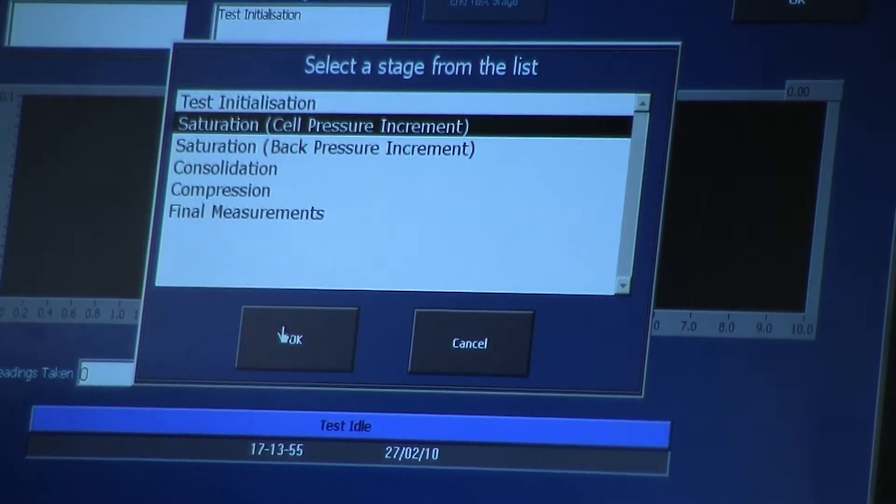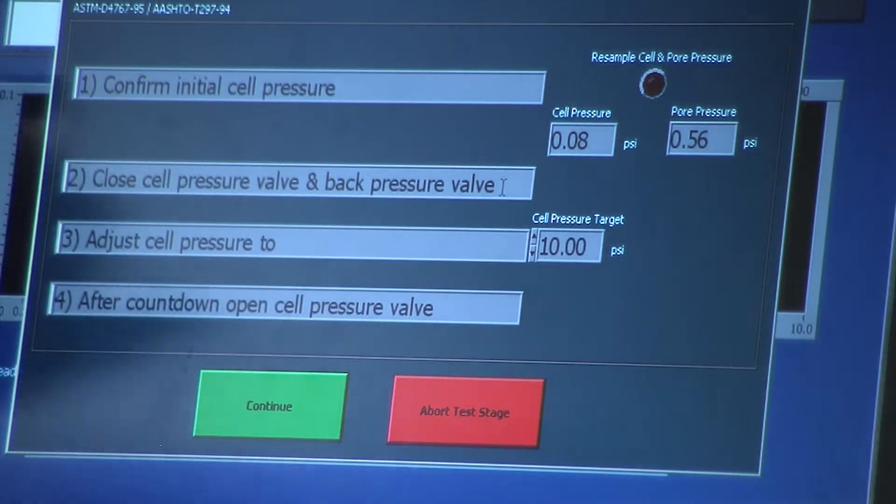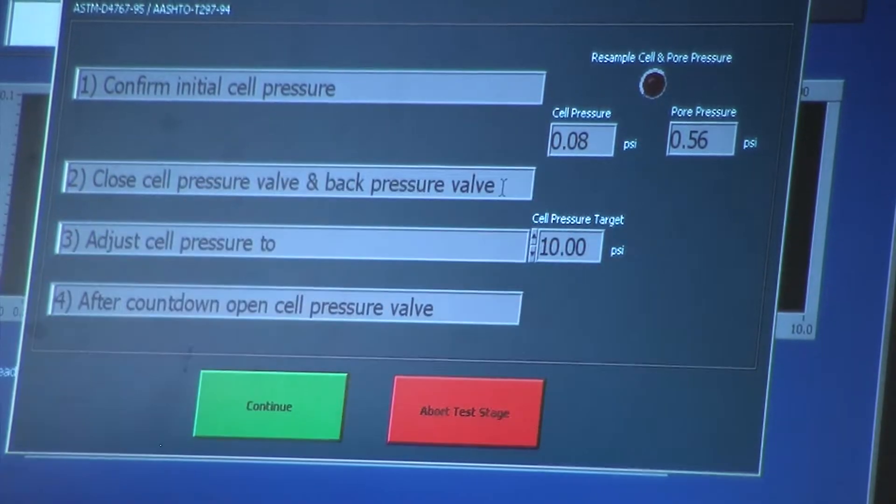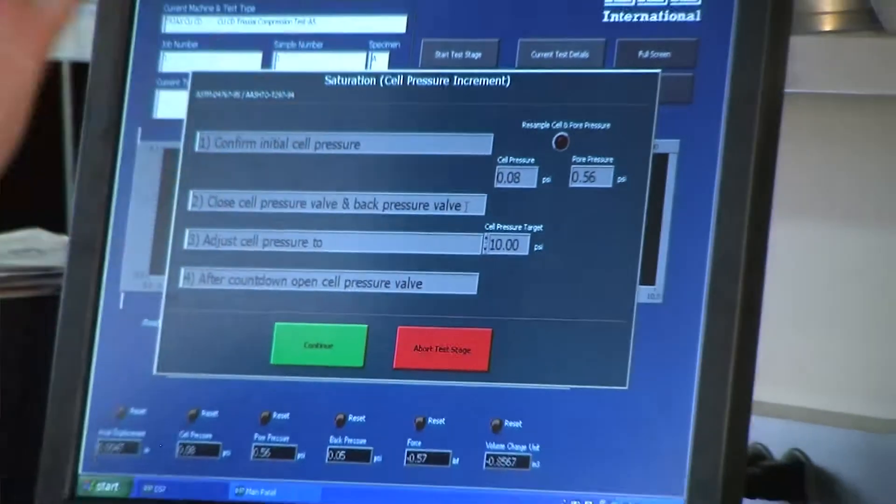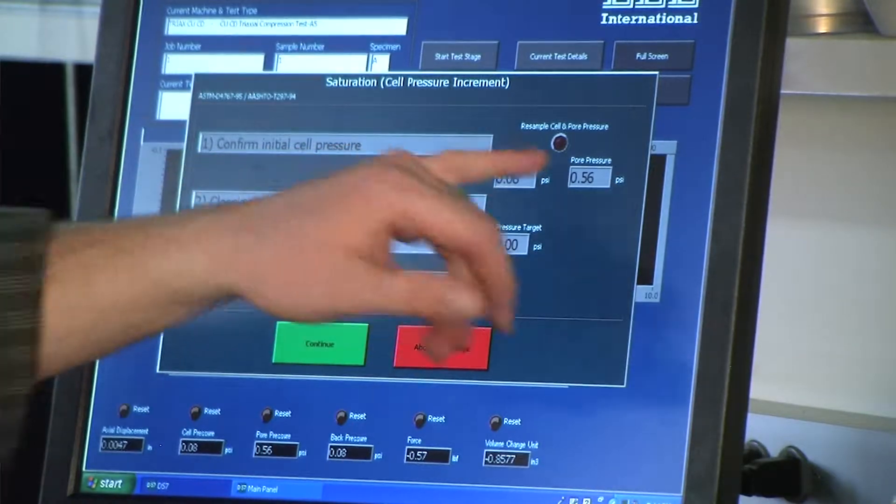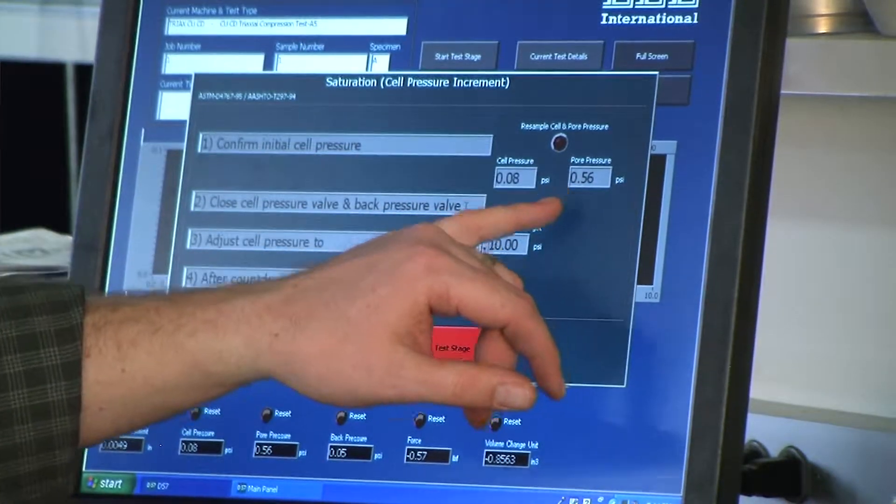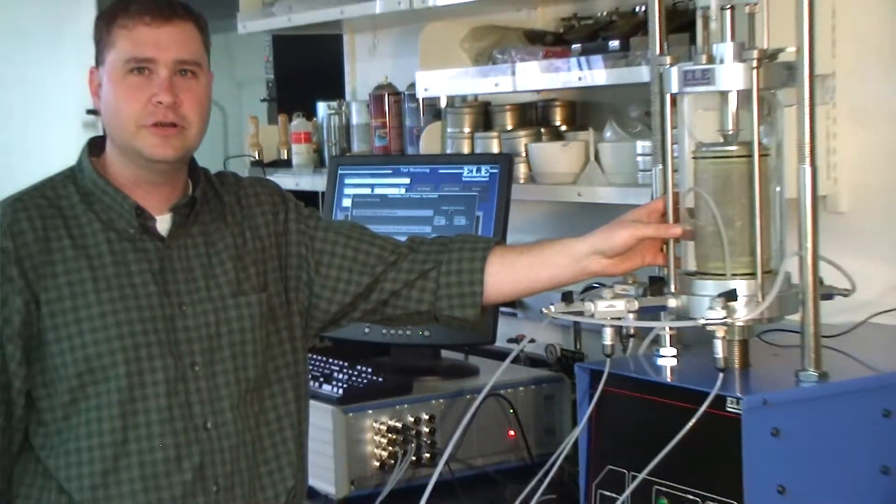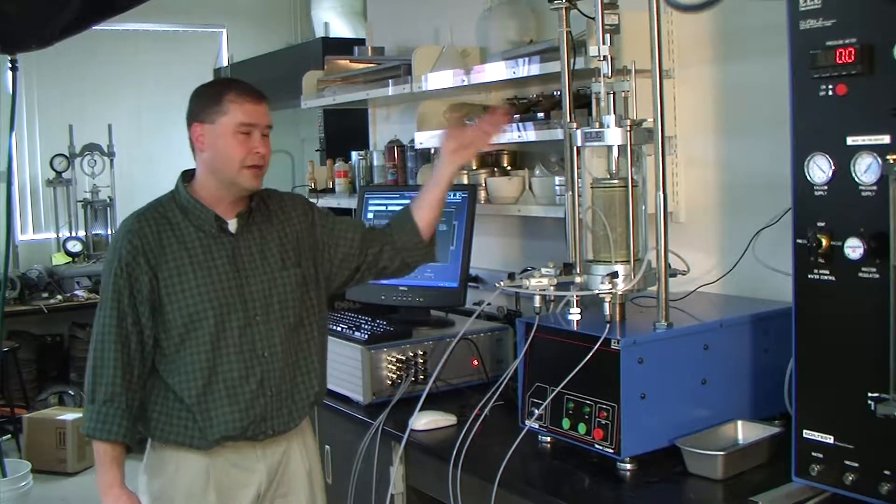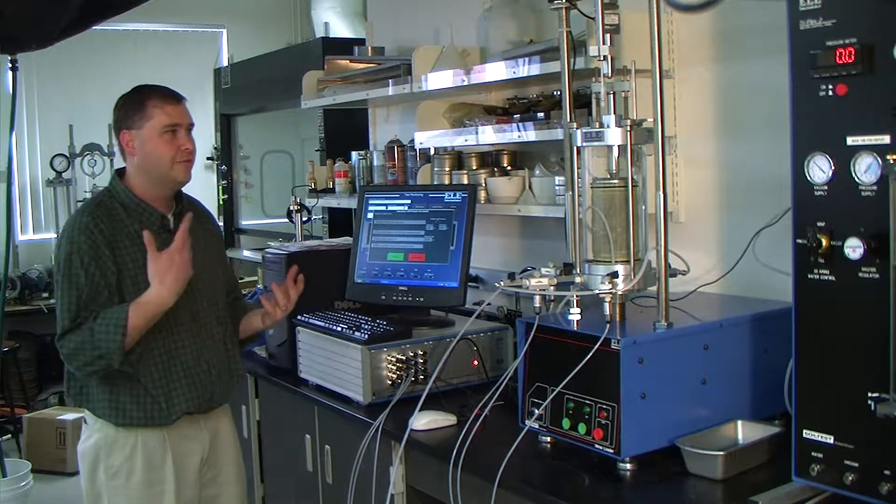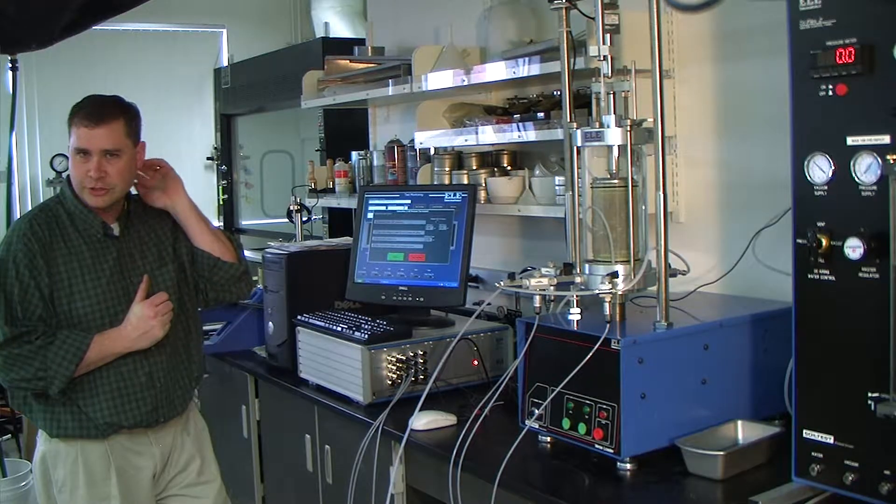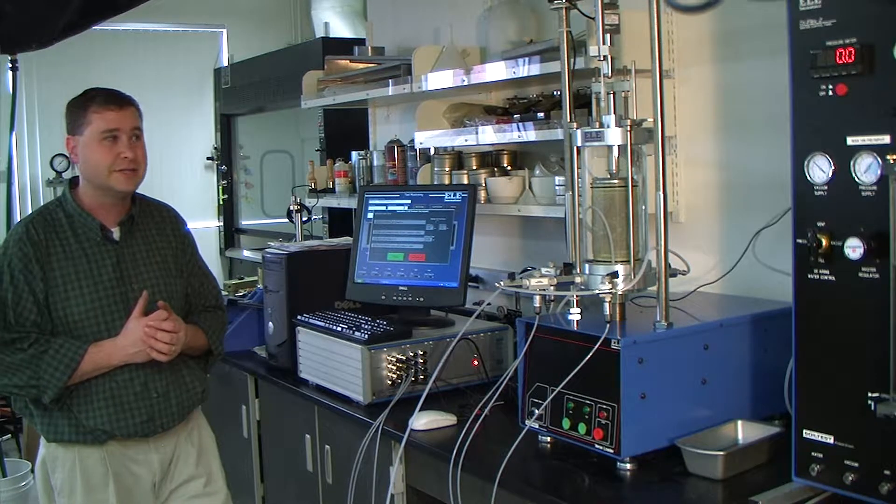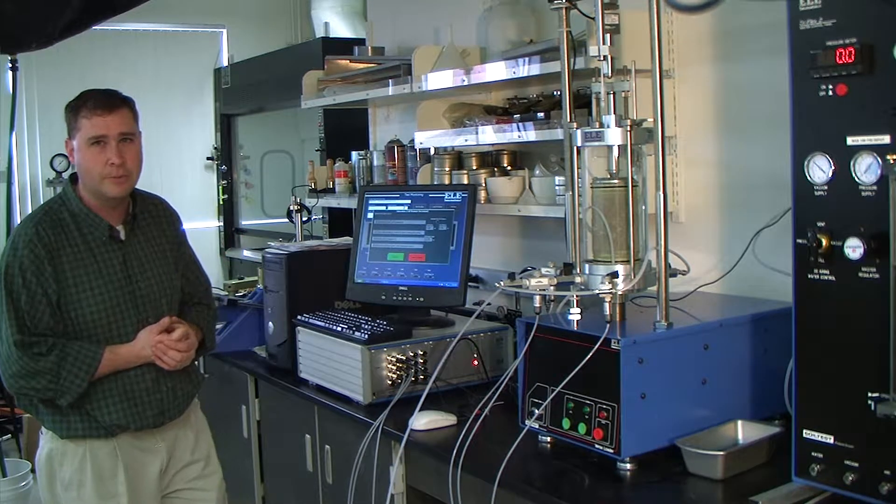The first thing you want to do is check the B-value. Step one, confirm your initial cell pressure, which takes readings from the bottom here. Our cell pressure is 0.08 PSI, essentially nothing. But if you notice, our pore pressure is not zero any longer. It's 0.56. The reason for that is because we have some hydrostatic pressure buildup due to the fact that we've filled the cell with water. We have a little bit of pressure in there that's generated some pore water pressure, which is actually a good sign because that tells us we're probably pretty close to saturation.